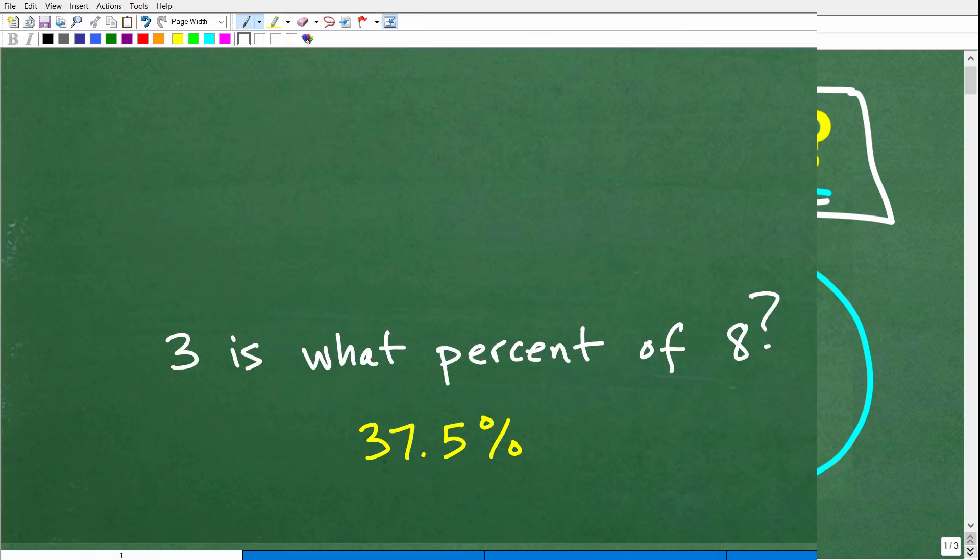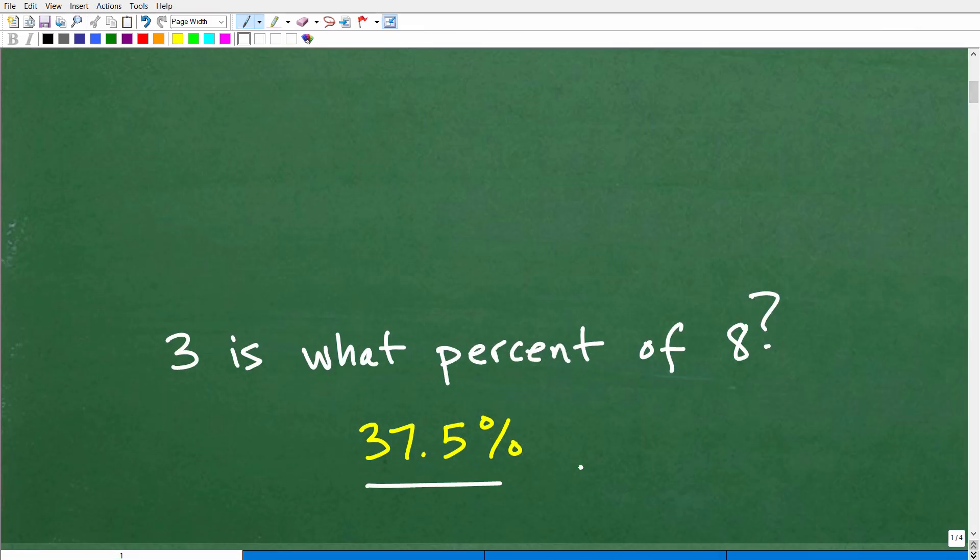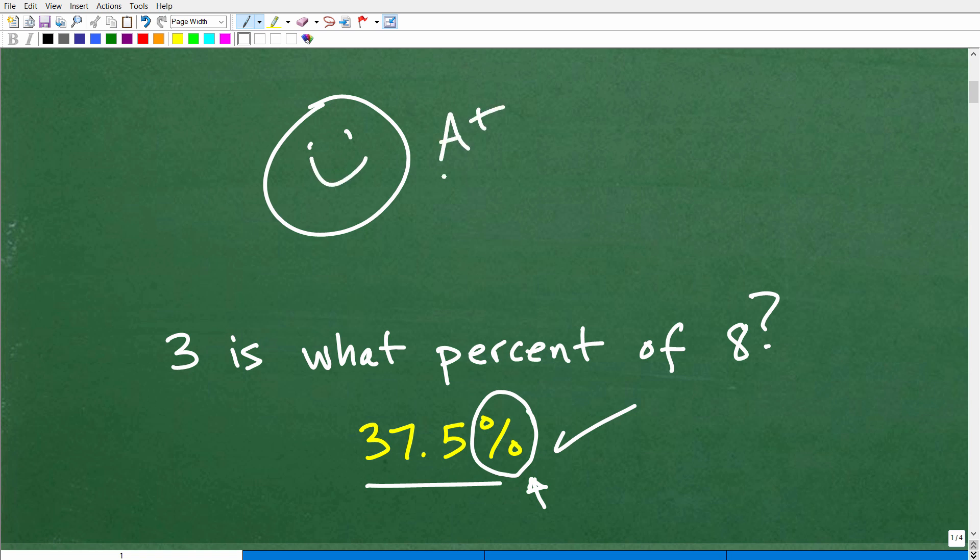All right, so 3 is what percent of 8? Let's take a look at the answer right now. The answer is 37.5 percent. I would have been remiss if I just said 37.5 - we have to have this little percentage symbol right there.